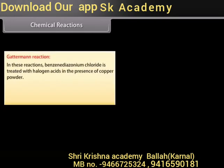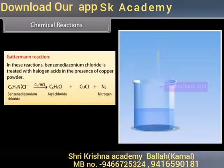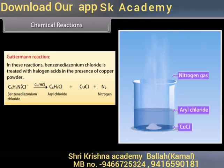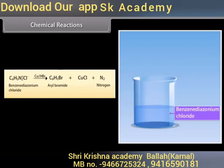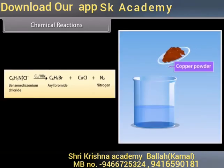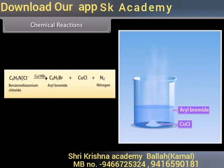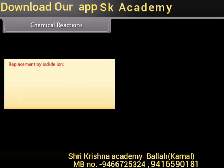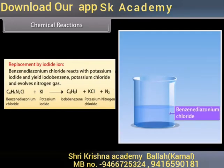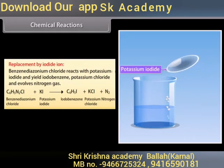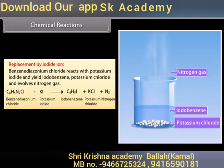Gattermann reaction: Benzene diazonium chloride is treated with halogen acid in the presence of copper powder. With hydrochloric acid and copper powder it yields aryl chloride, cuprous chloride, and nitrogen gas. With hydrogen bromide and copper powder it yields aryl bromide, cuprous chloride, and nitrogen gas. Benzene diazonium chloride reacts with potassium iodide to yield iodobenzene, potassium chloride, and nitrogen gas.